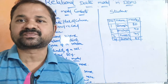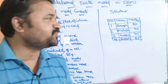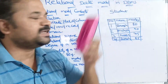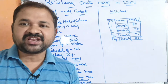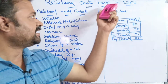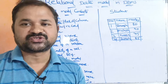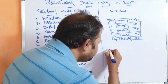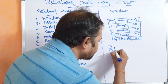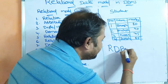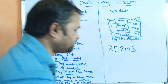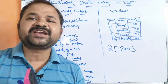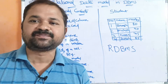In this video, we are going to discuss about the relational data model in DBMS, which can also be called as the relational model. DBMS means RDBMS only — relational database management system. So DBMS means relational database management system, because nowadays we are using RDBMS only.